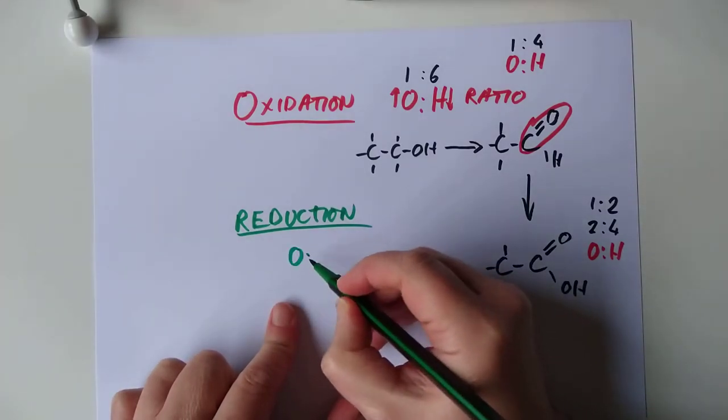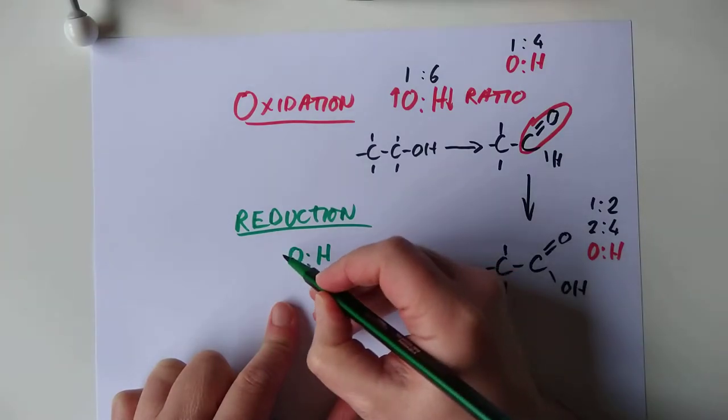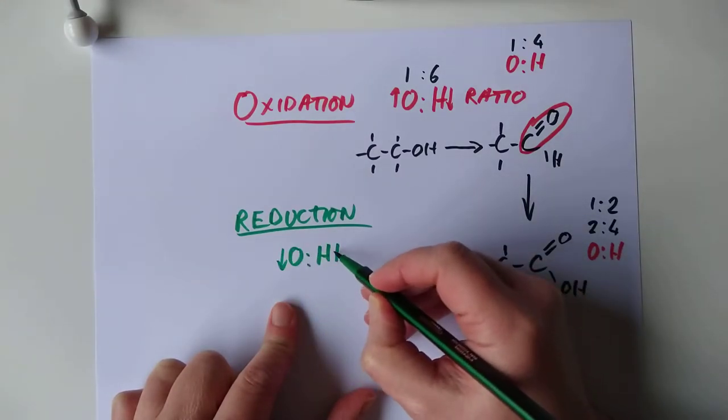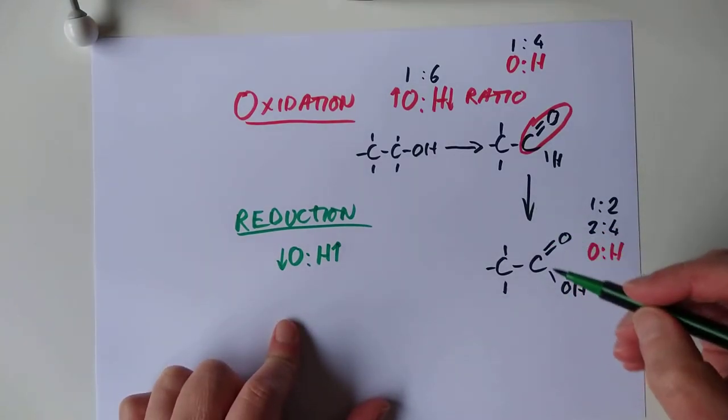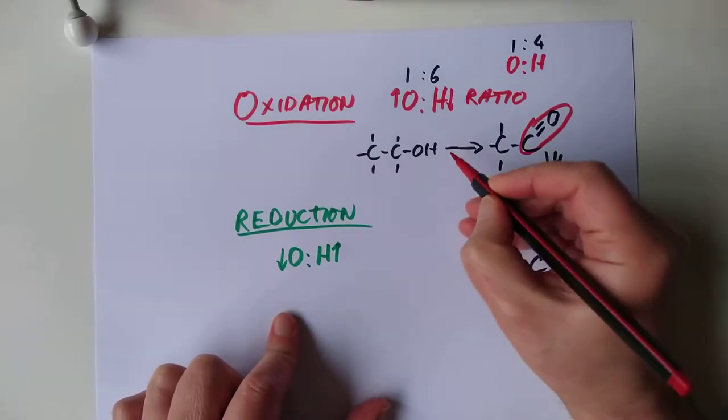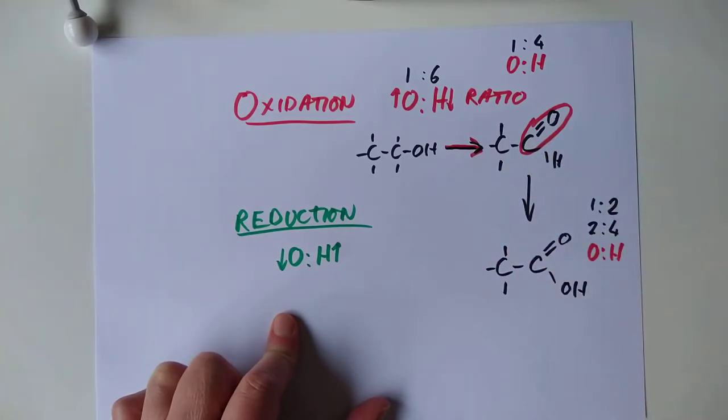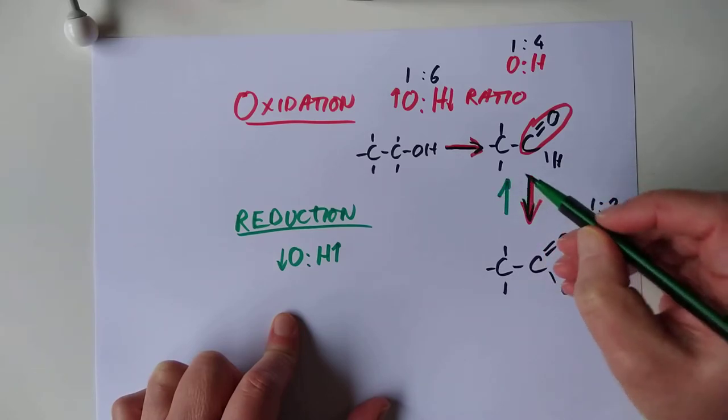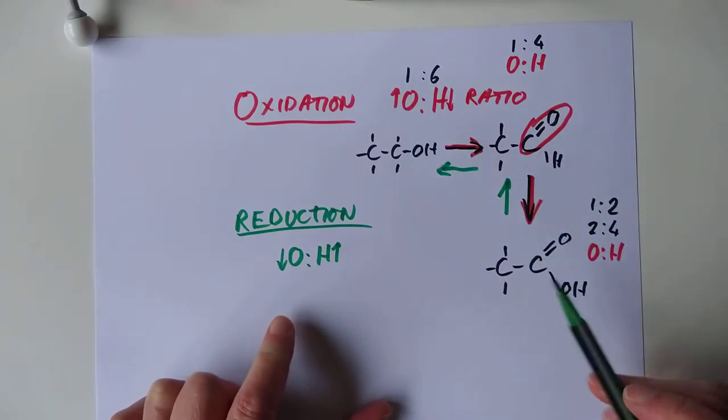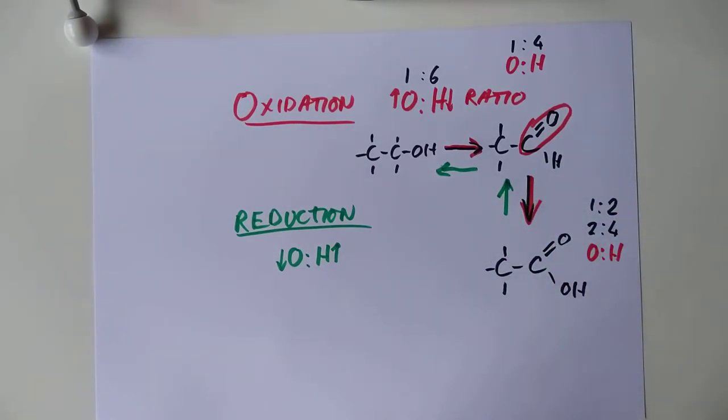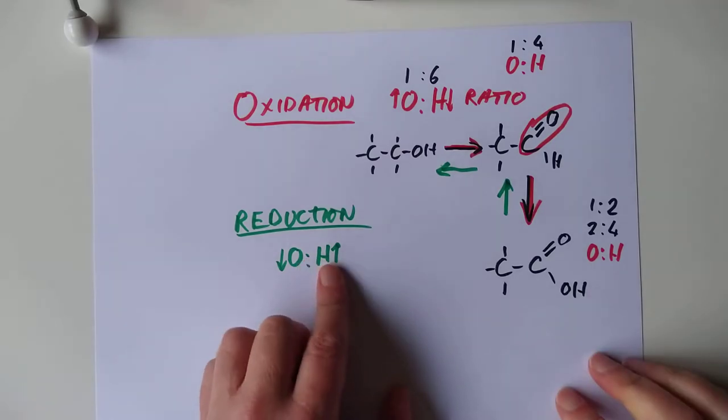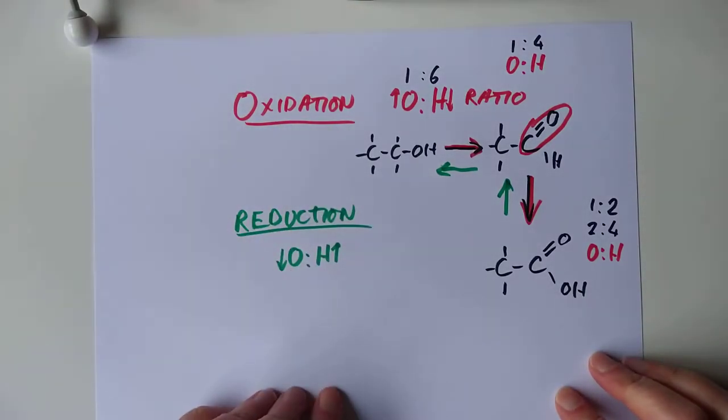Before we address this mystery homologous series, reduction would be either removing oxygens or increasing the number of hydrogens in the molecule. You could start with the carboxylic acid and go backwards and backwards again if you have a reducing agent. The SQA don't need you to know any reducing agents. They tend to go this direction, oxidation. But be aware you can also go in reverse, that's reduction.